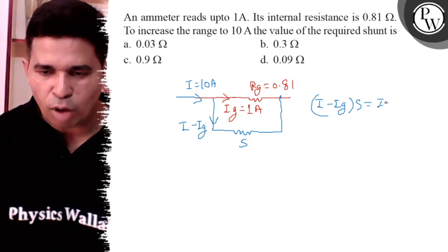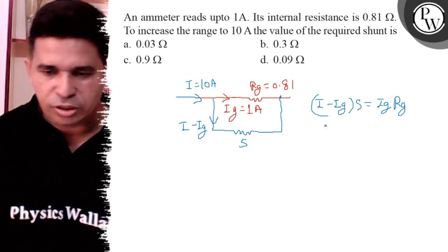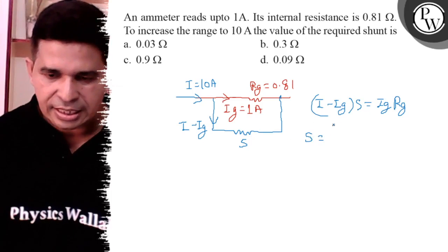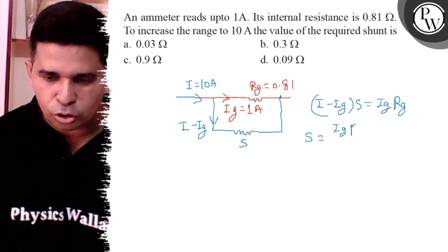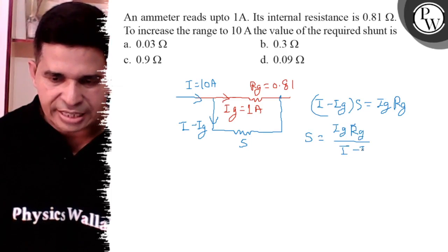S is equal to IG into RG. So what is the value of S? It is IG into RG upon I minus IG.